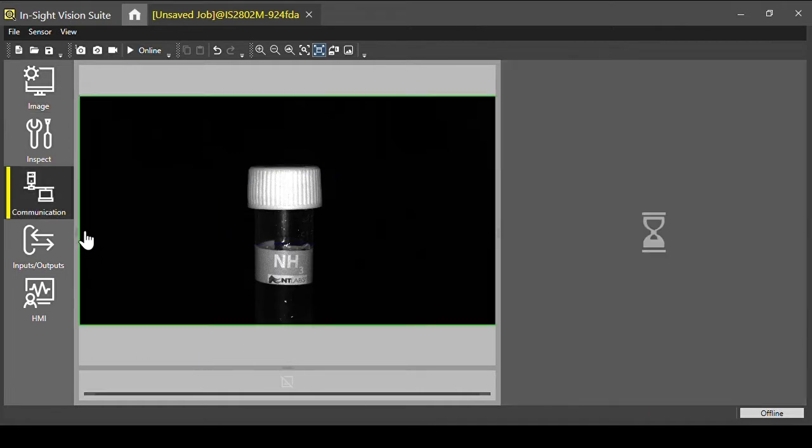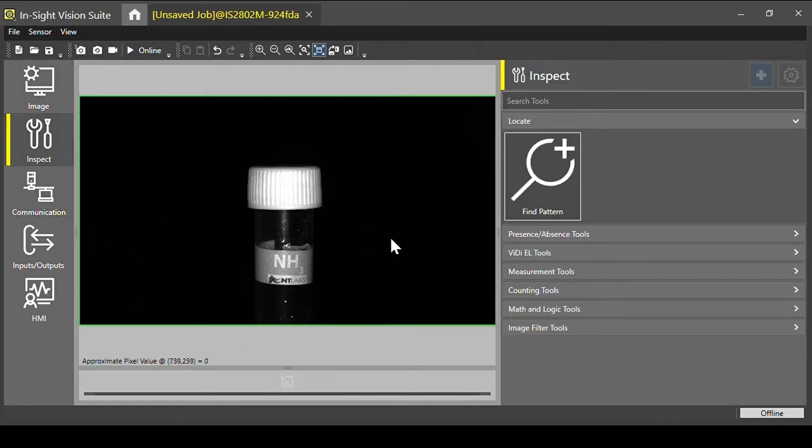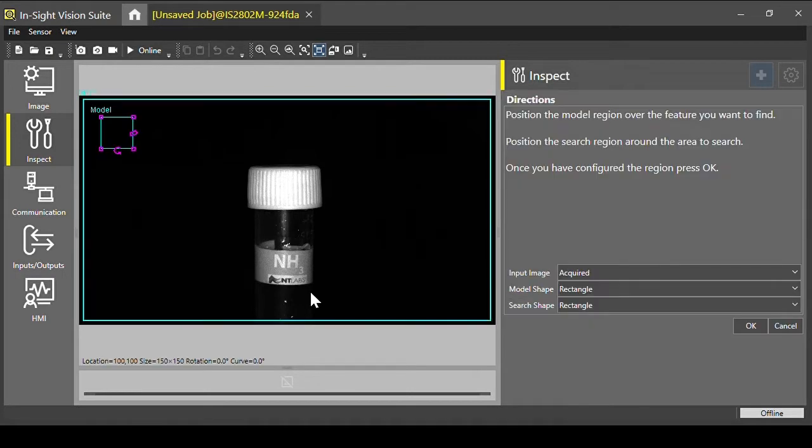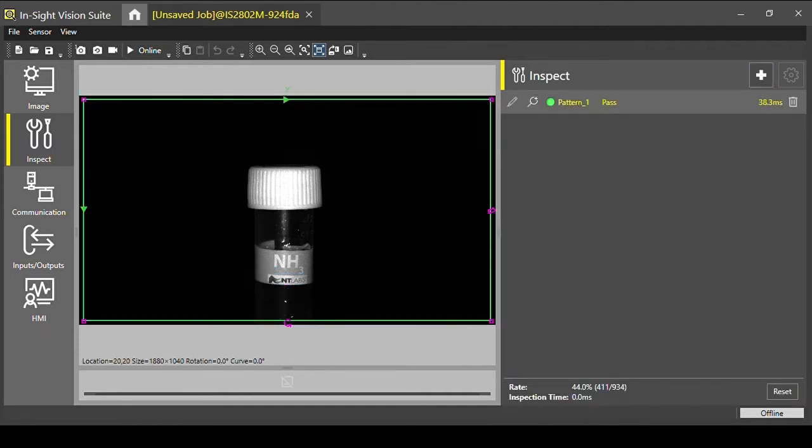So the first thing that I'm going to do, once I go into inspection, is I'm going to set up a pattern match tool, which is just going to help us locate each test tube. So I'm just looking at this little logo which is present on each of the test tubes. I've just drawn a box around the particular pattern. And that's just going to add a tool so we can track that test tube in our area.